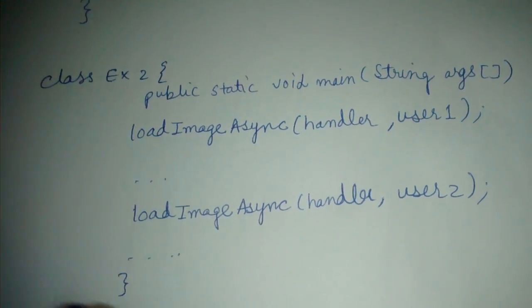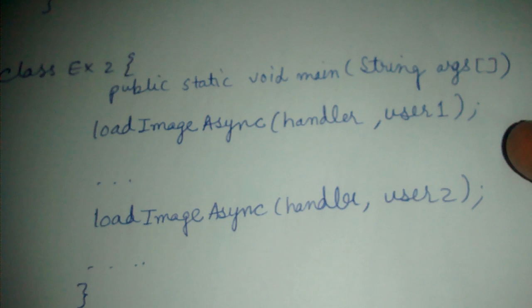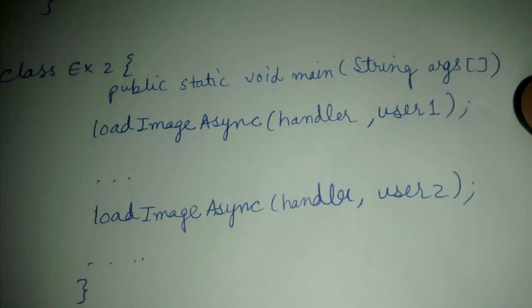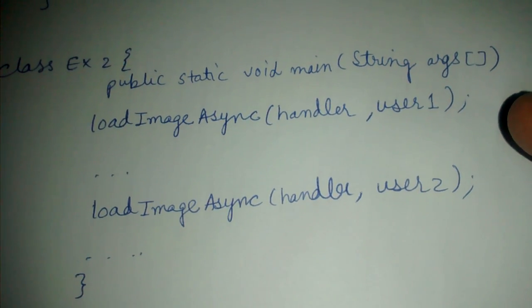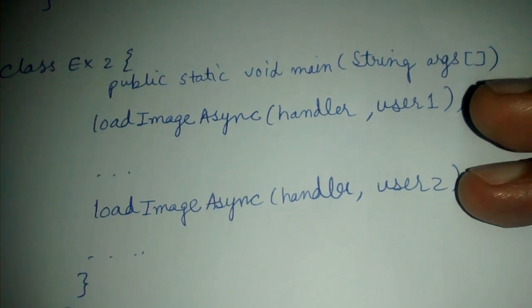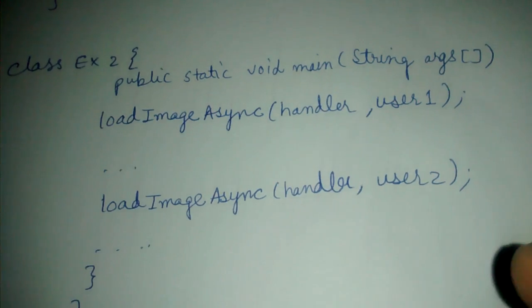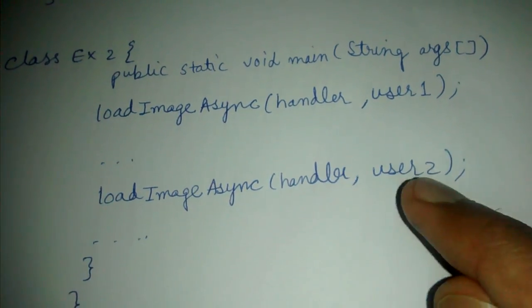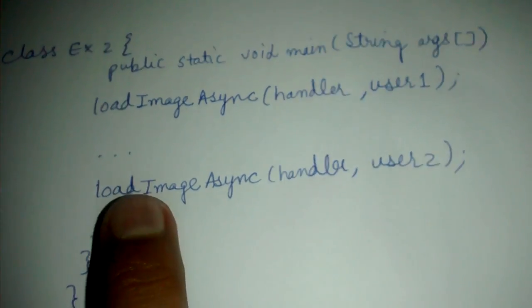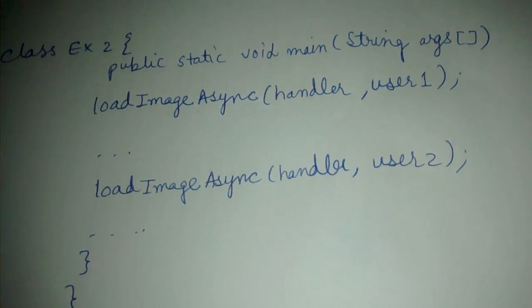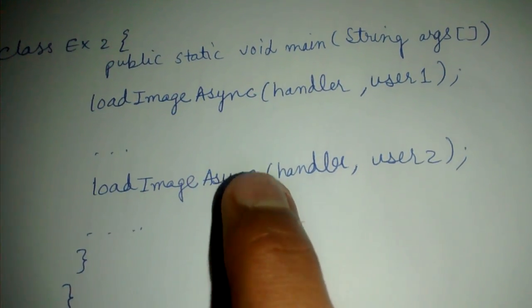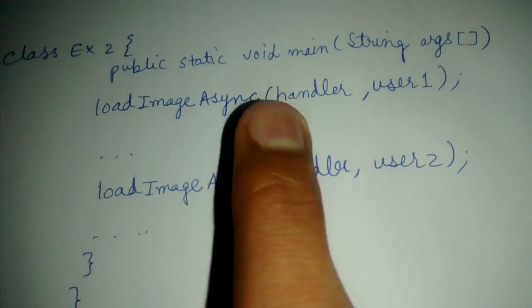Also, if you want to stop the loading of an image in between, the handler needs to know which user or which call to stop. Let's say you want to say, 'Okay, I don't want to load image for user 2,' then you will stop that call.